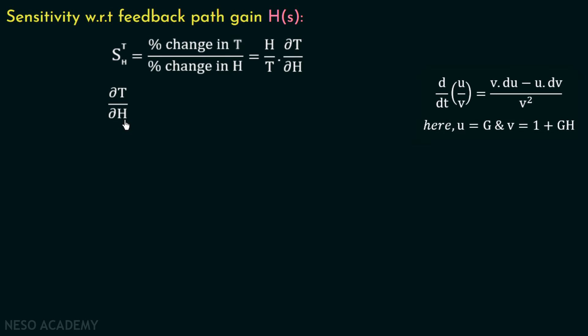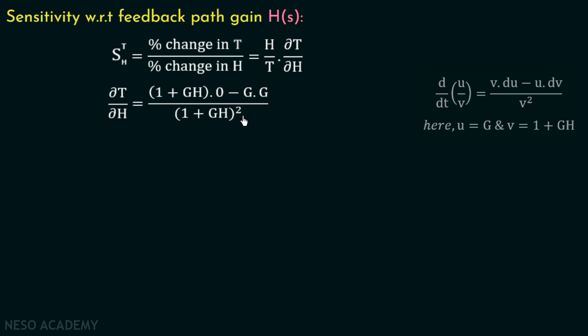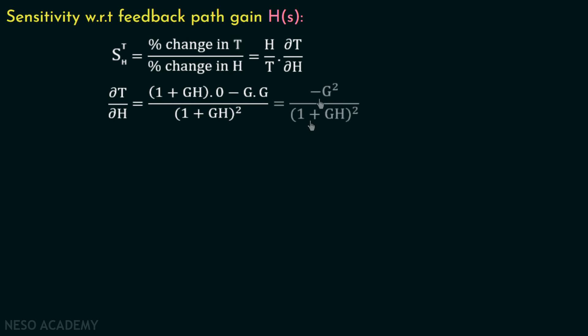So del T over del H equals (1 + GH), the denominator treated as constant, multiplied with the derivative of G with respect to H. If we differentiate G with respect to H, it is treated as constant and equals 0. Minus G multiplied with the derivative of (1 + GH), and the derivative of (1 + GH) with respect to H equals G. This is divided by (1 + GH) squared. Solving this gives minus G squared over (1 + GH) squared.